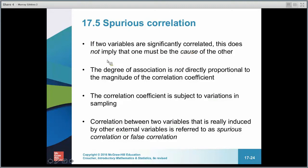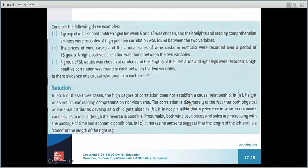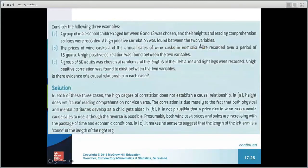It's important to note that finding a correlation doesn't necessarily imply that one event causes the other. There's some degree of association, but it may not be directly causal. It could be a fluke — your sample might just happen to look that way. For example, a study of male school children aged 6 to 13 found a positive correlation between height and reading comprehension. But that's most likely just a coincidence — being taller doesn't mean you'll be a better reader.